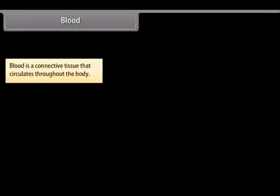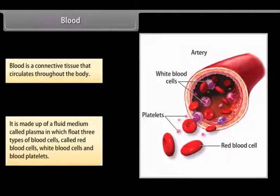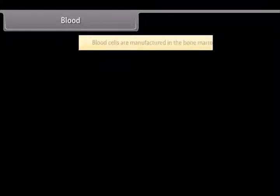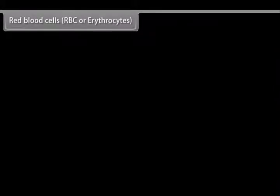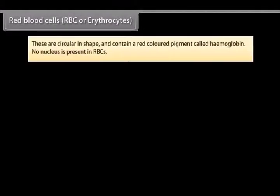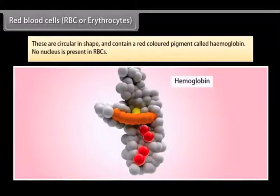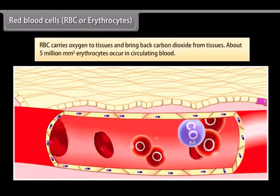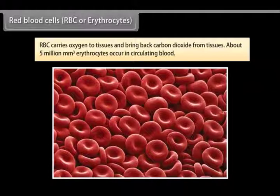Blood is a connective tissue that circulates throughout the body. It is made up of a fluid medium called plasma, in which float three types of blood cells: red blood cells, white blood cells and blood platelets. Blood cells are manufactured in the bone marrow. Red blood cells (RBC or erythrocytes) are circular in shape, contain a red pigment called hemoglobin, and have no nucleus. RBCs carry oxygen to tissues and bring back carbon dioxide from tissues. About five million per mm³ erythrocytes occur in circulating blood.